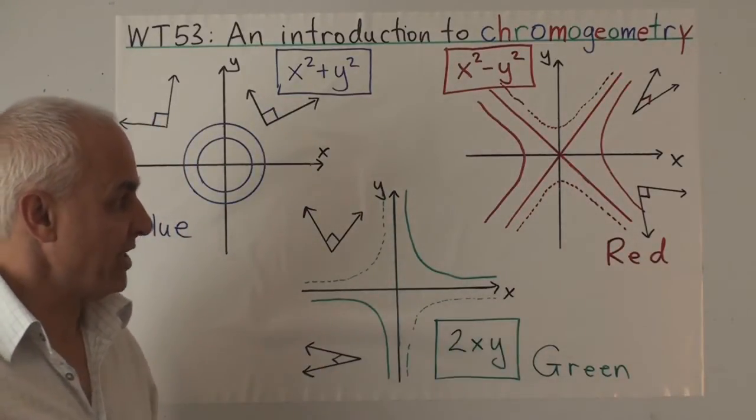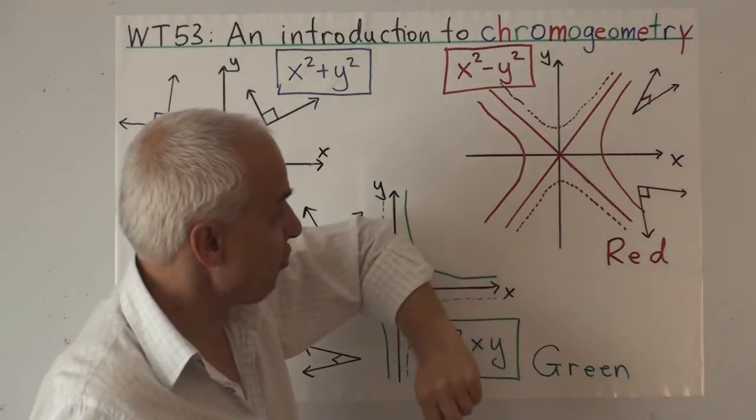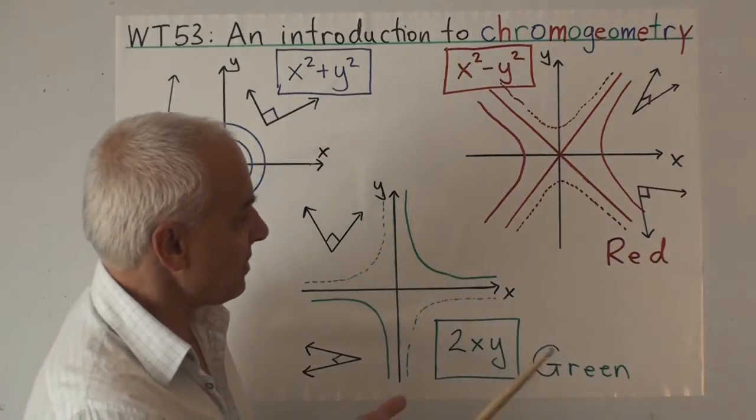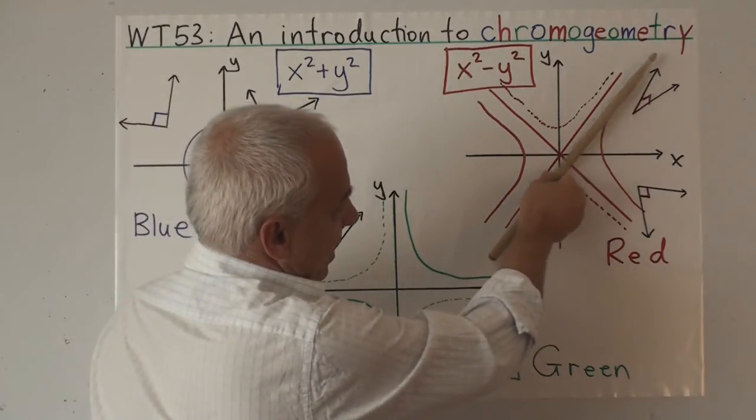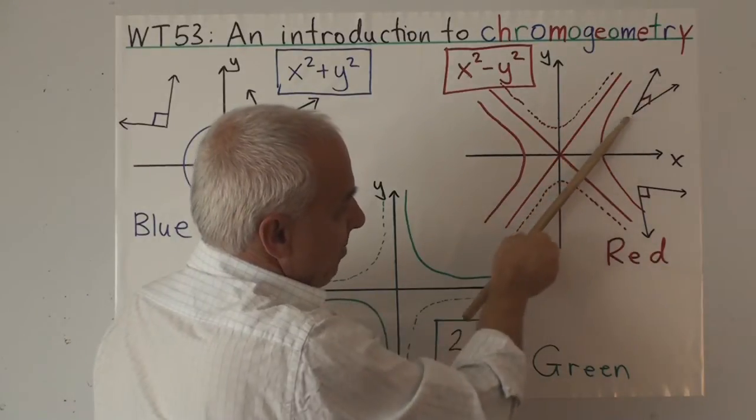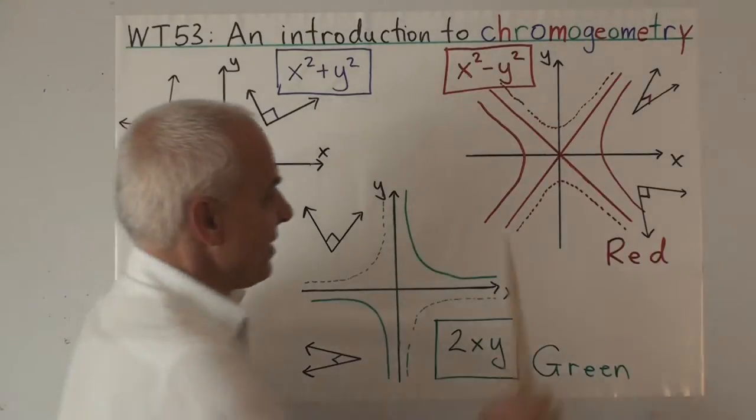Perpendicularity in the red sense has a different meaning. These two vectors are red perpendicular, so are those, and we can visualize that by saying that the null line translated there bisects those vectors in the usual sense. Similarly this null line bisects those vectors in the usual sense.